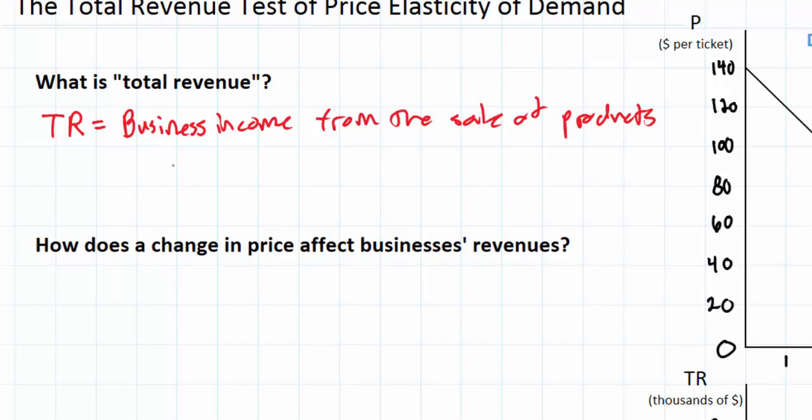And total revenue has a very simple formula for determining the total revenue of businesses in the market for a particular good. And that is the price of the good times the quantity being sold. So at any level of output along a demand curve we can easily find the total revenue earned by firms in that market by multiplying price by quantity.